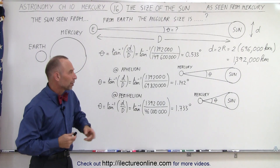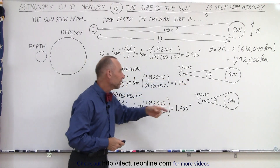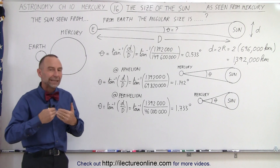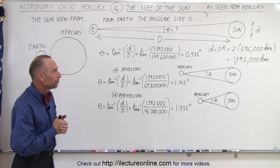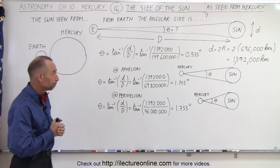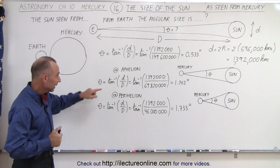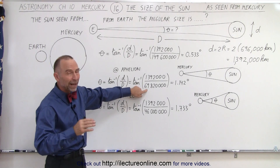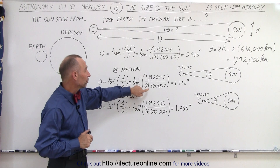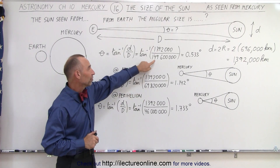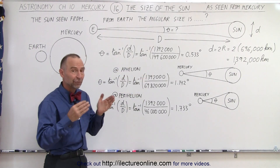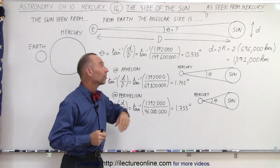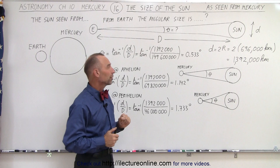But what would it be like if we're on Mercury and looking at the Sun when we are at aphelion — the farthest point in the elliptical orbit of Mercury from the Sun? Again, we take the inverse tangent, but now we'll be at a position of about 70 million kilometers, which is less than half the distance from the Earth to the Sun. Therefore, the disk of the Sun will appear a little bit greater than twice the size as it appears from the Earth.